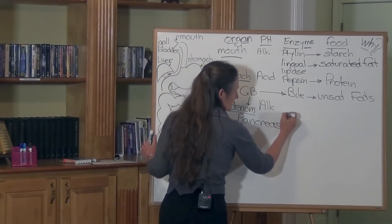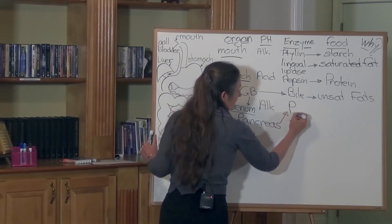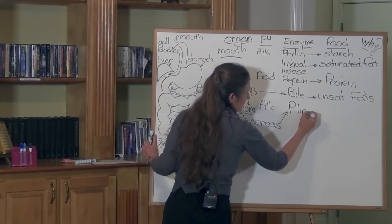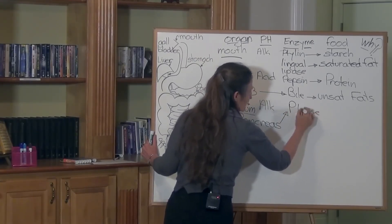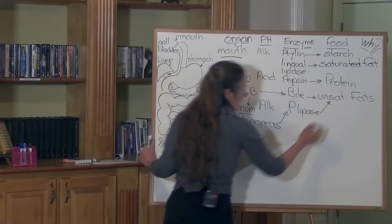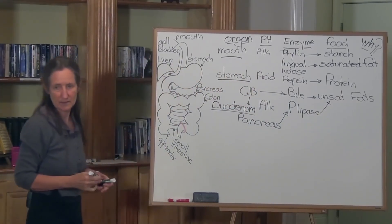The pancreas releases pancreatic lipase, and pancreatic lipase does the final breakdown of the unsaturated fats, the long chain fatty acids. So bile starts it, pancreatic lipase finalizes it.